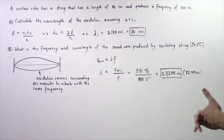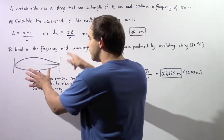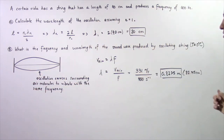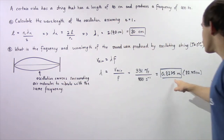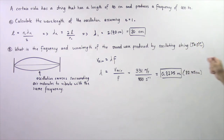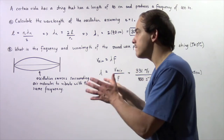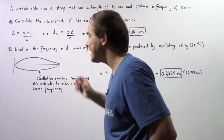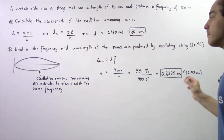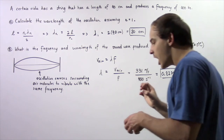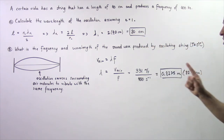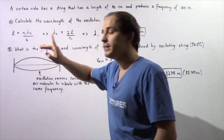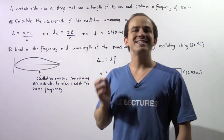The standing wave on the violin has a wavelength of 80 centimeters, but the sound wave produced as a result has a wavelength of 82.75 centimeters — greater by 2.75 centimeters. This is because the velocity of the wave in the string is different from the velocity of the mechanical sound wave in air. This difference in velocities produces a difference in wavelength, even though the frequency of the standing wave and the sound wave are exactly the same.